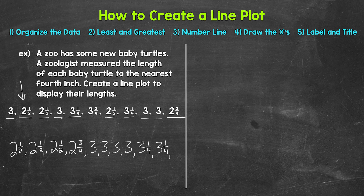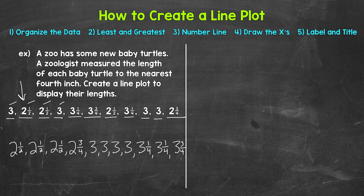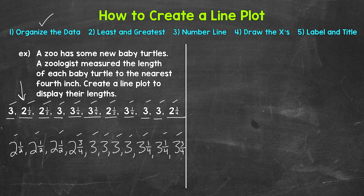Next is three and a half — we don't have any turtles that were three and a half inches long. Next is three and three fourths — we have one turtle that was three and three fourths inches long. And that's all of our data. Let's double check by counting both lists to make sure they match. We have 11 turtles in the original list, and 11 in our organized list. So we are good to go. Our data is organized from least to greatest.